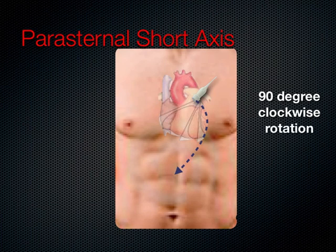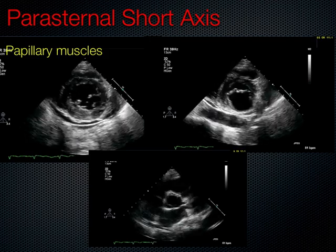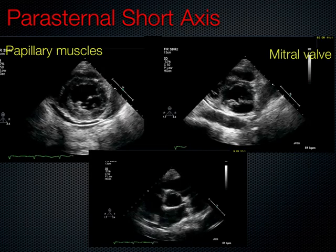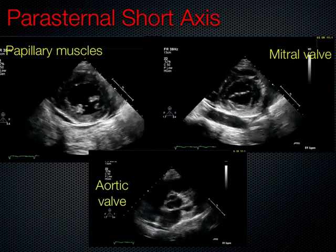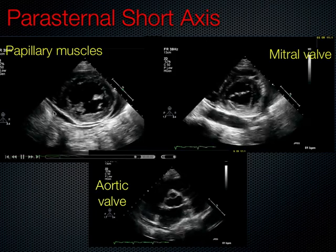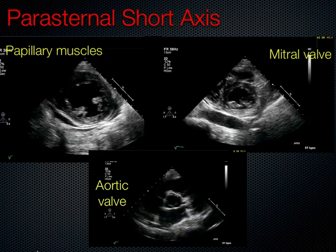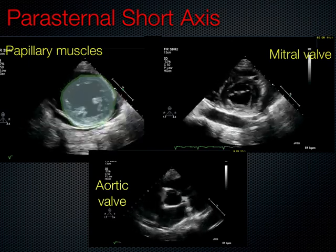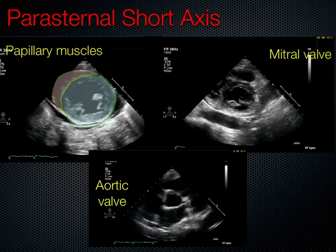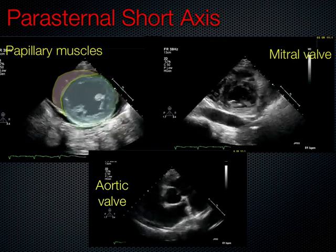Turning the probe from the parasternal long axis view 90 degrees clockwise, we can intersect the heart in its short axis and slice it like a loaf of bread, seeing the left ventricle at several different levels. At the papillary muscle level, the mitral valve looks like a fish mouth, and the aortic valve shows the classic Mercedes sign assuming a tri-leaflet valve. In this view, the left ventricle should appear circular — like a donut — with the right ventricle sitting atop like a small beret. If the left ventricle does not appear circular, it often represents pathology.